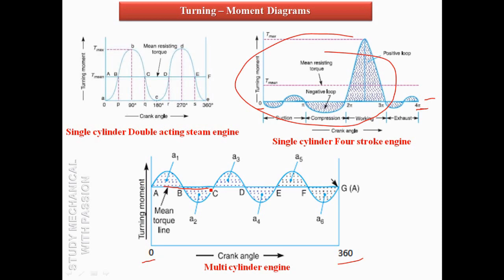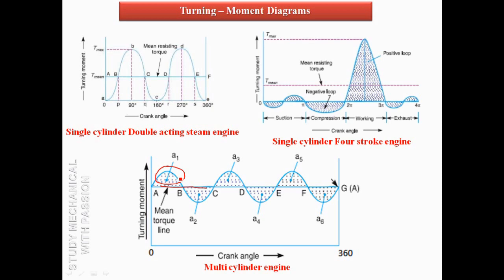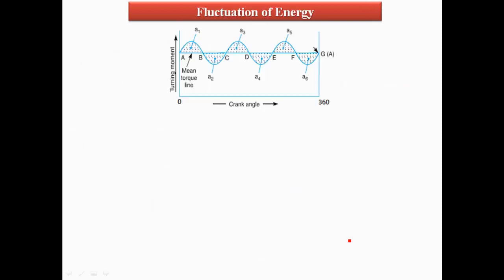Applying the turning moment on the x-axis (theta) and y-axis (torque), the area under the turning moment diagram curve actually represents energy stored in the flywheel. Above the mean torque line — areas a1, a3, a5 — are positive areas, meaning energy is added to the system. Areas a2, a4, a6 are negative, meaning energy is rejected from the system to the flywheel. This represents fluctuation of energy.